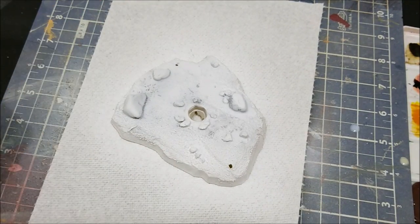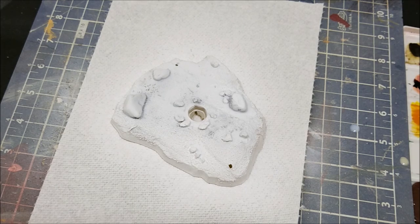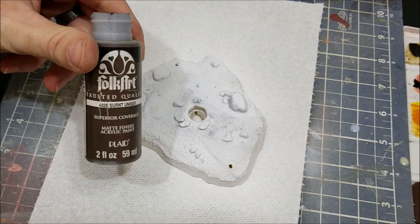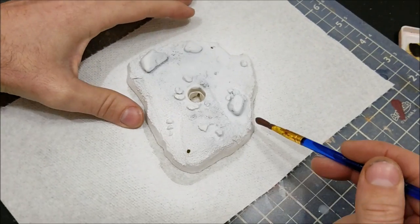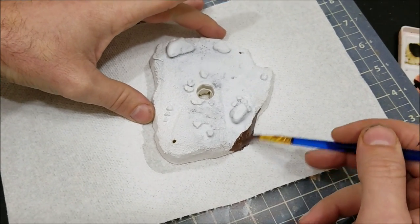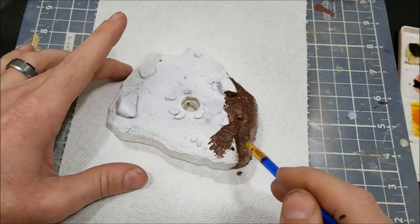Now that everything is cured and hardened, we're going to prime it white. We're going to do a dirty muddy kind of jungle ground, so I'm going to be using burnt umber. I'll put a couple of coats on the base.